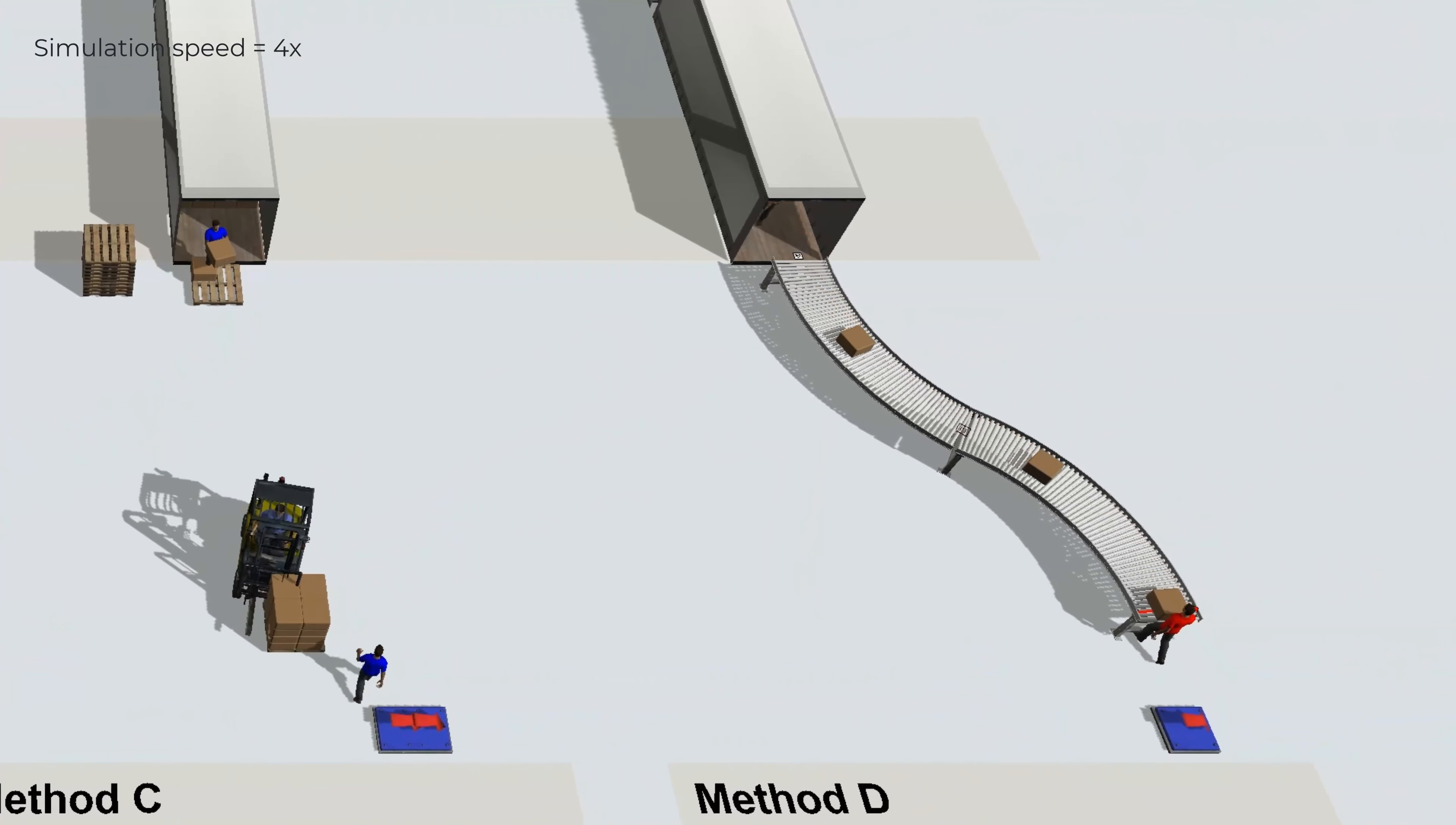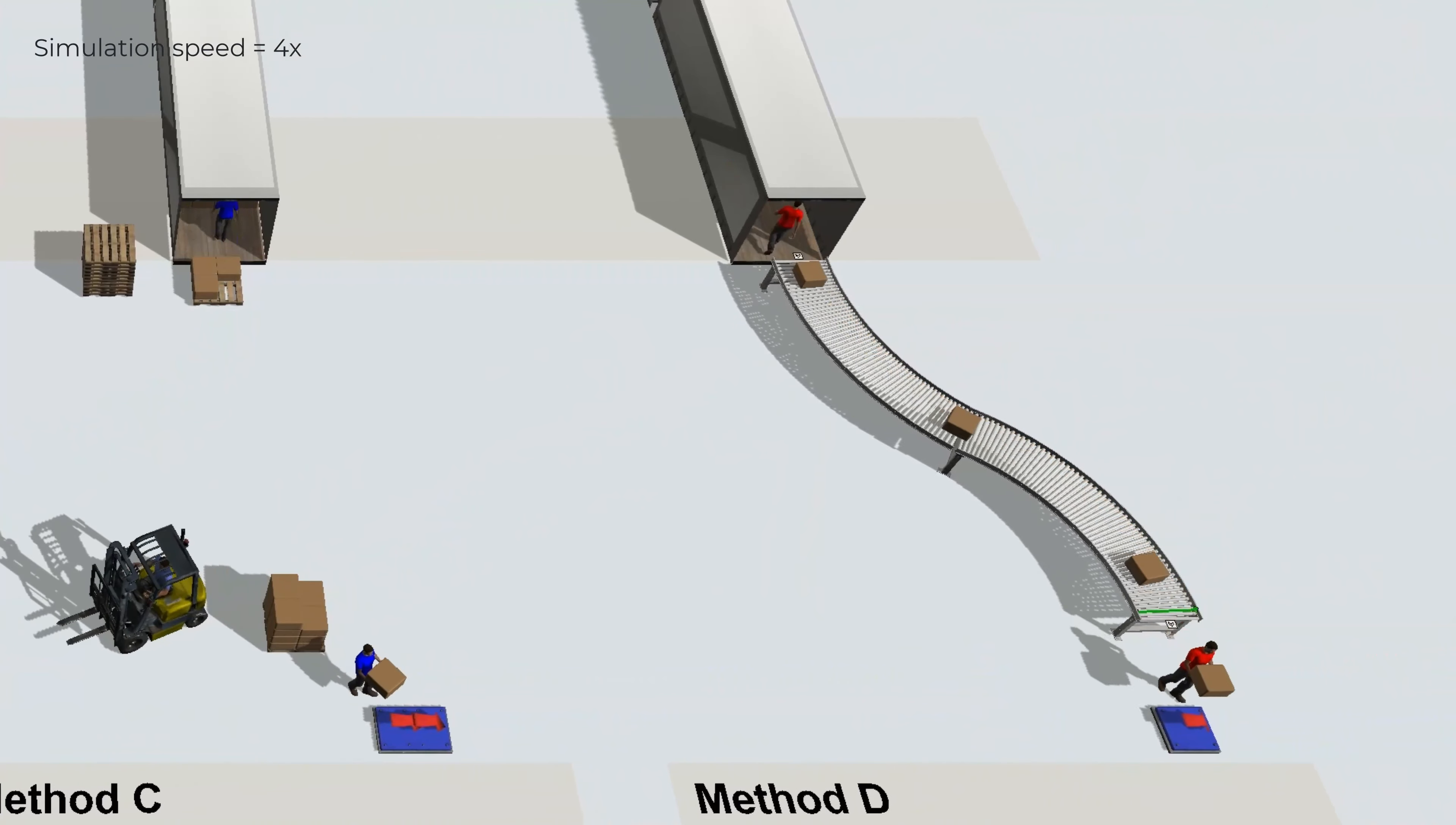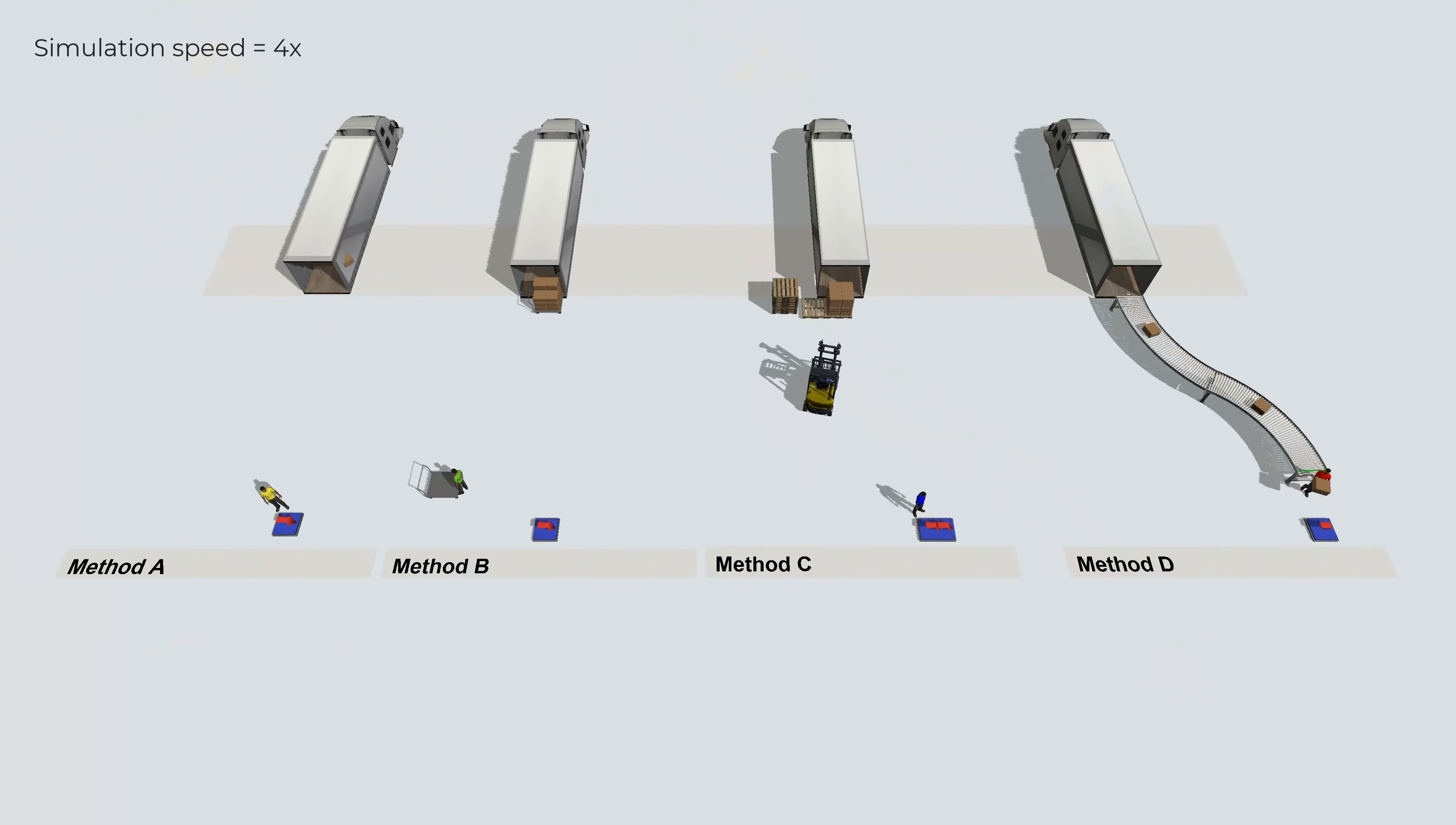The last method D here is where the red shirt guy places the boxes on a conveyor. Of course, there are more methods than these. For example, using a pallet and a pallet jack. But let's look at the performance of these four methods.